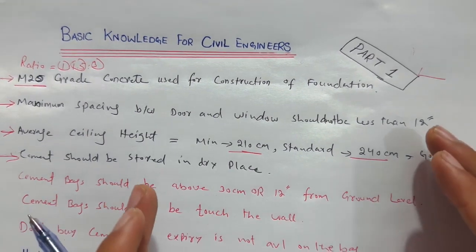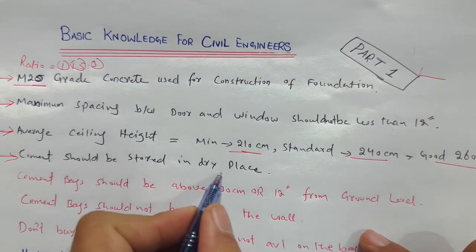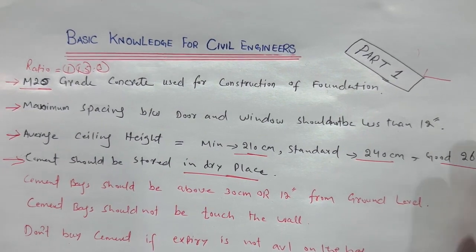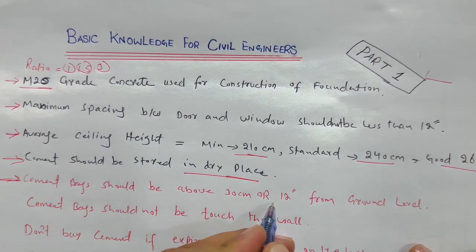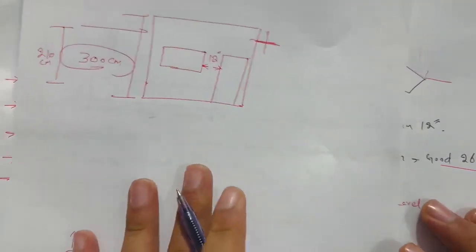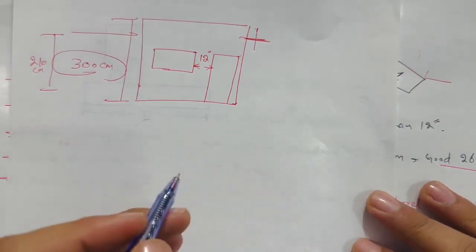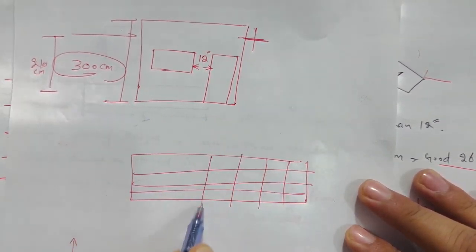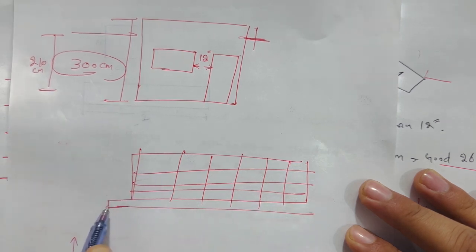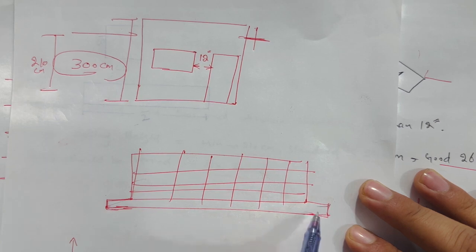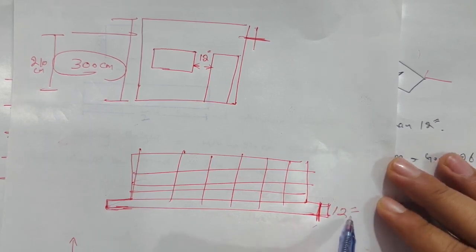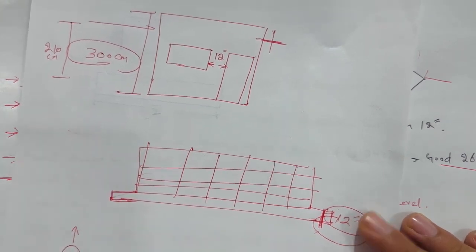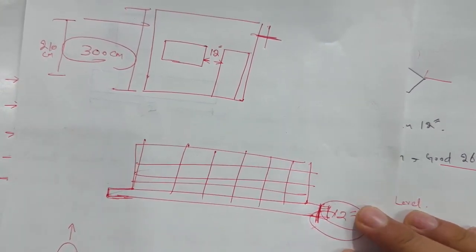Next, cement should be stored in a dry place. Cement is very sensitive and it can lose strength if stored improperly, so it should not be kept in a wet place. Also, cement bags should be placed above 30 centimeters or 12 inches from the ground level. As you can see, the cement bags should be raised on some kind of support so they are above the ground level by at least 12 inches. Otherwise, if placed directly on the ground, seepage and atmospheric conditions will cause problems.